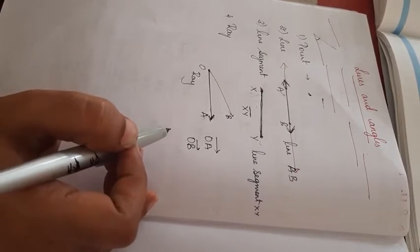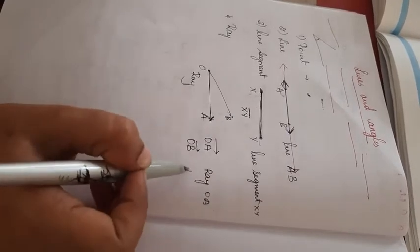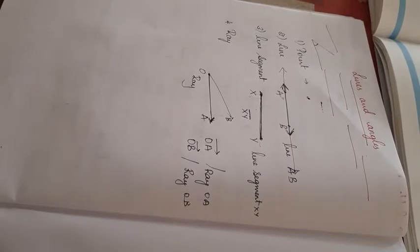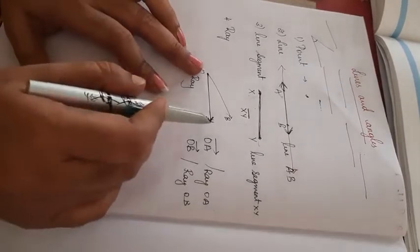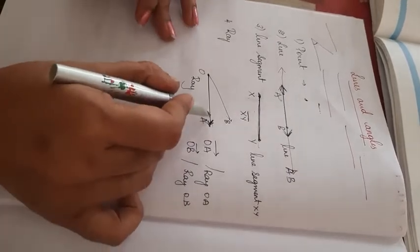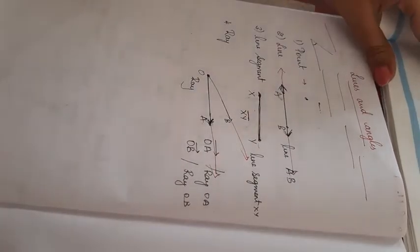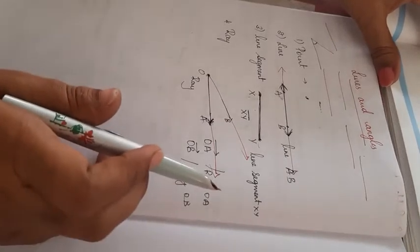Now, you are going to denote it. Either we can write this as ray OA or ray OB, or you can denote it by notation. A ray is a part of a line which extends indefinitely in one direction. In one direction I can extend it — not in the other direction because it has an end point.